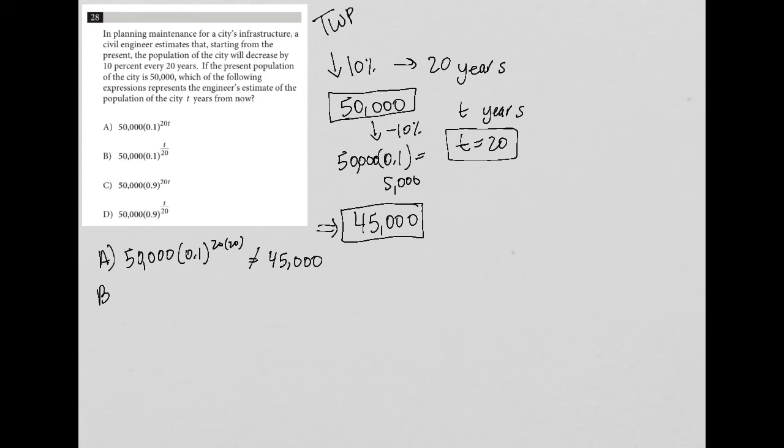Choice B is the same thing. So 50,000 times 0.1, but this time it's 20 divided by 20, which is just 1. This is 400. Is that equal to 45,000? And again, you'll find that that's not the case.